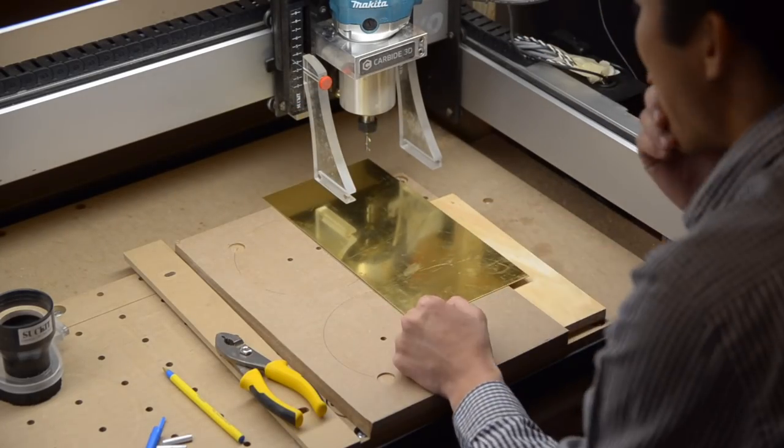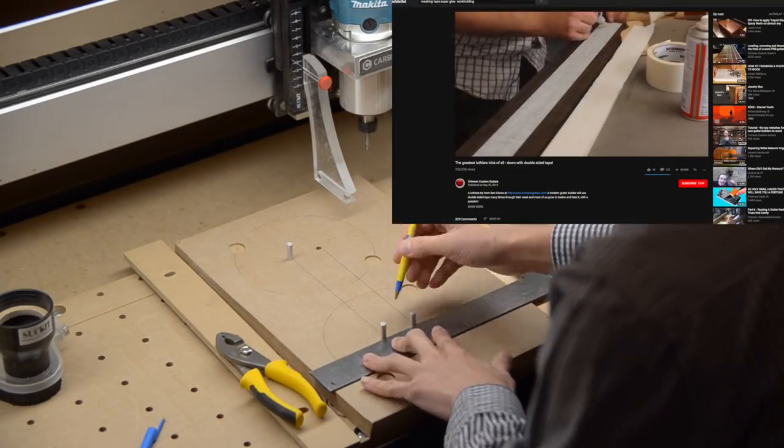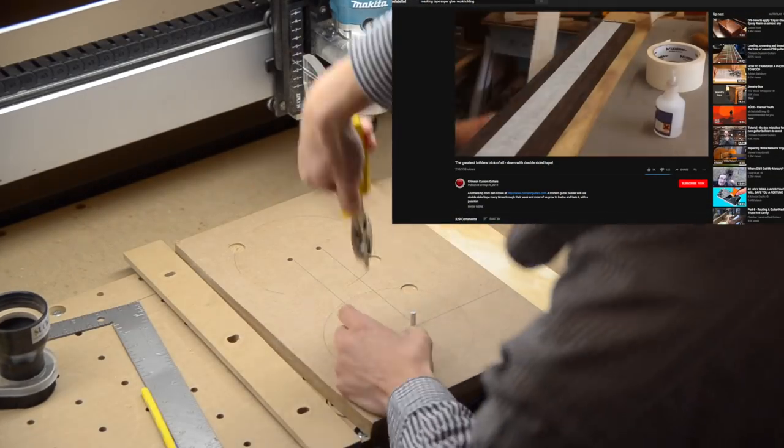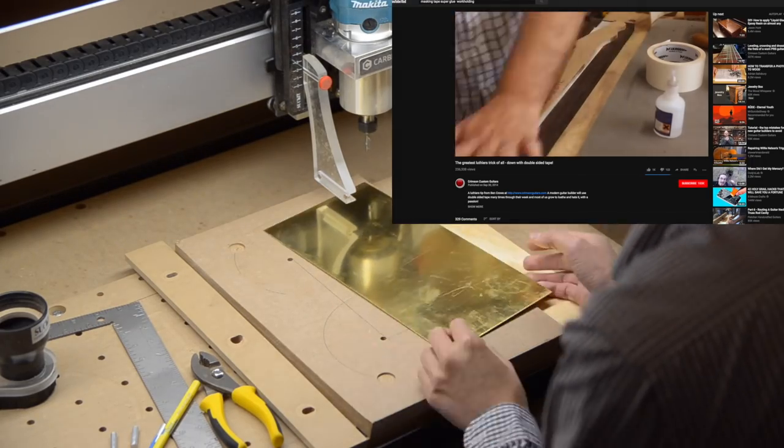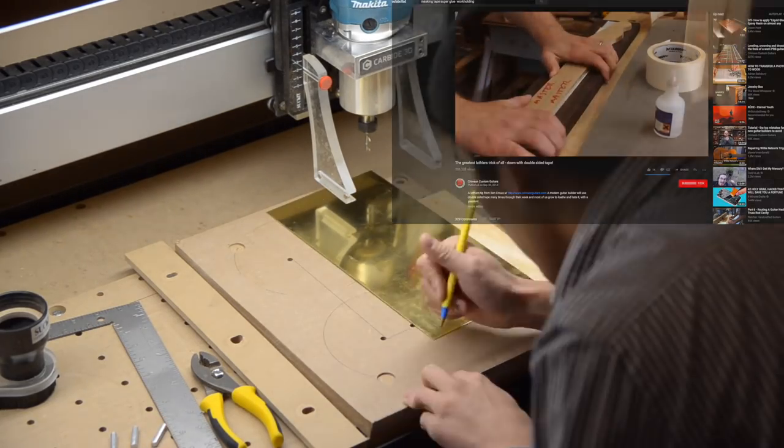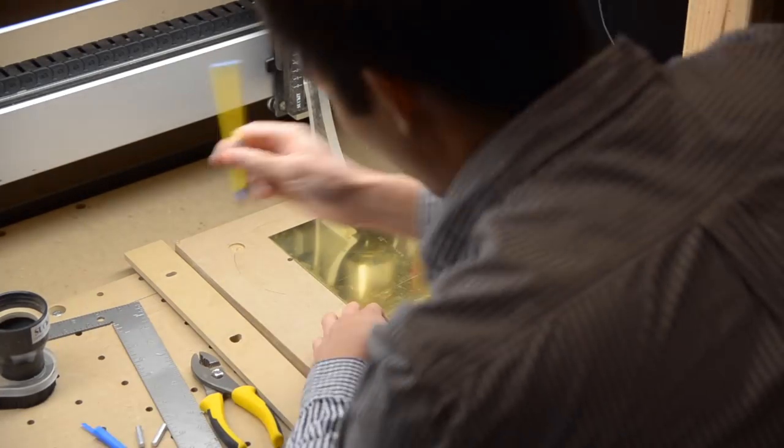Way back in the day when I was looking for ways to secure thin pieces of stock to my CNC, I came across a video of a guy using masking tape and superglue to affix a piece of wood to his workbench. The idea is that you stick a piece of masking tape to your work surface and to your workpiece and you put superglue in between. The tape will adhere to itself and no glue residue will be left on your piece.